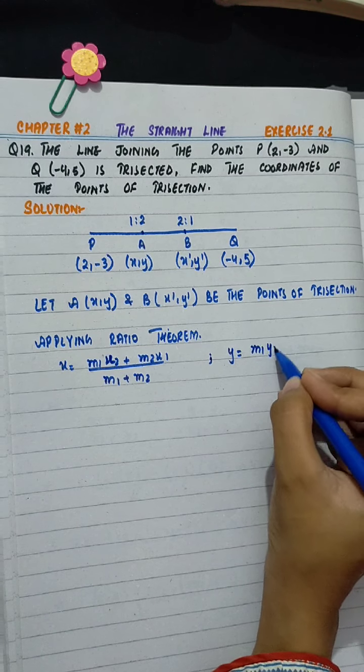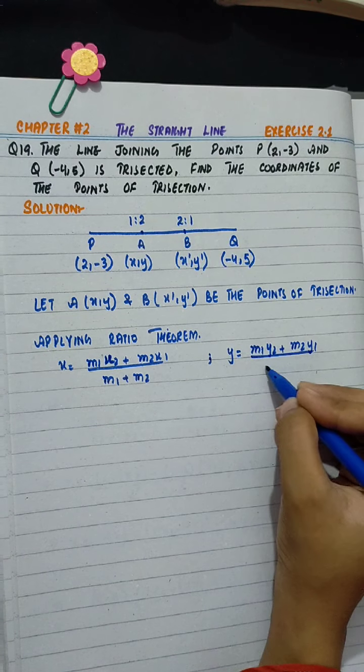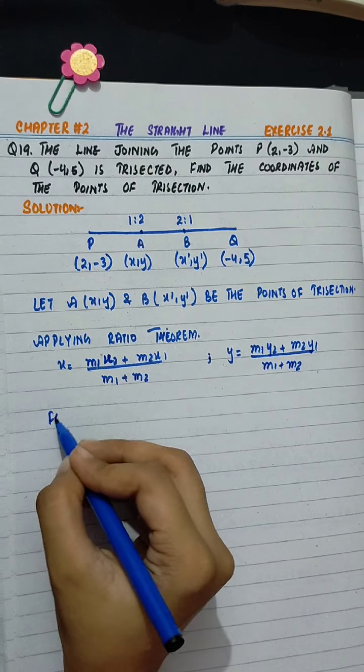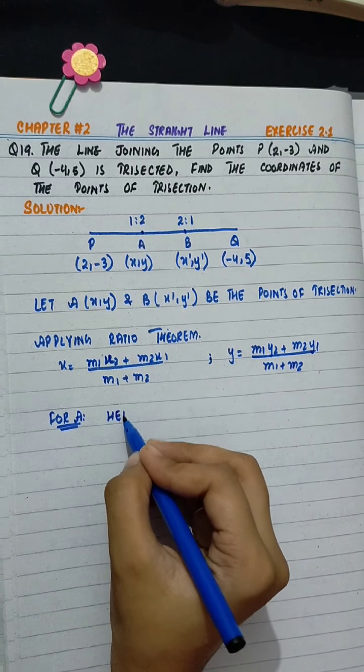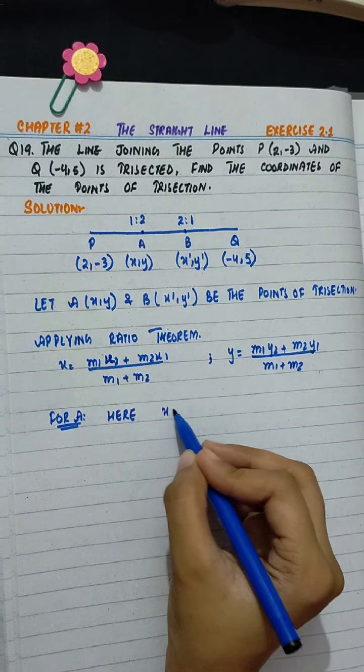Applying the section ratio theorem: x equals M1·x2 plus M2·x1 divided by M1 plus M2, and y equals m1·y2 plus m2·y1 divided by m1 plus m2. For point A, x1 is 2, y1 is -3, x2 is -4, y2 is 5, m1 equals 1 and m2 is 2.